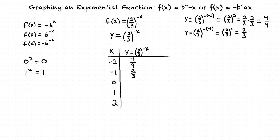Next, let's find the y value when x equals 0. We see that we get y equals 2 thirds to the negative 0, but anything to the 0 power is just 1, so our answer is y equals 1.